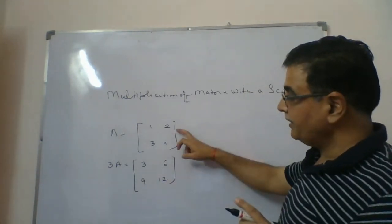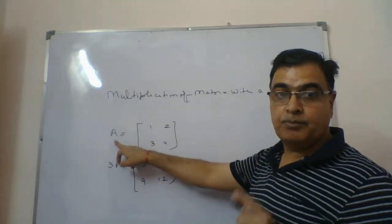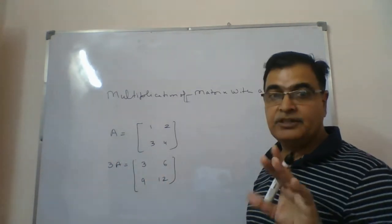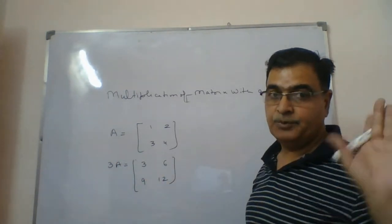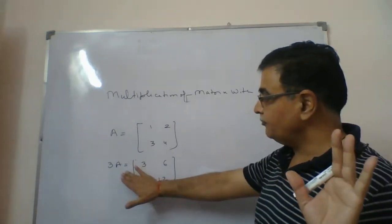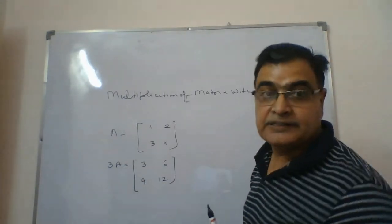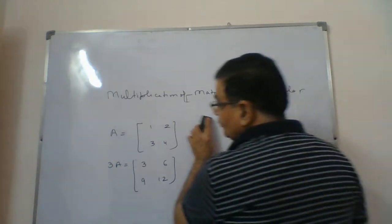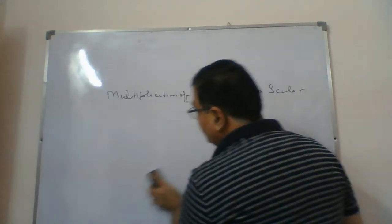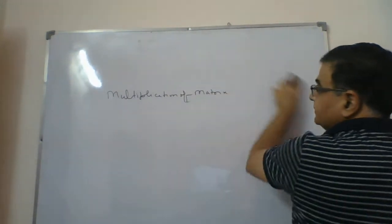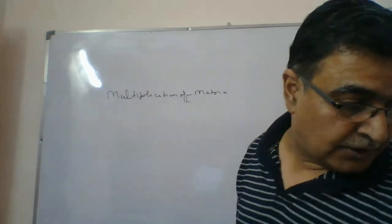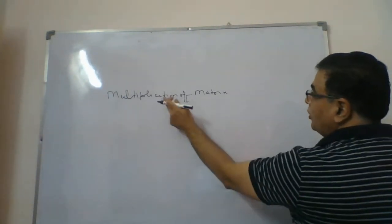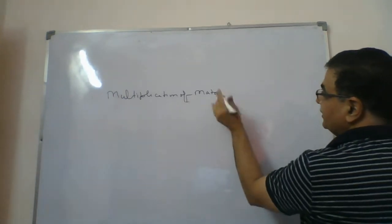Keep in mind: whenever we say any matrix multiply with a scalar, it will multiply with each and every element. That is the first thing you should keep in mind. The second thing we are covering is multiplication of a matrix with another matrix — multiplication of matrices.